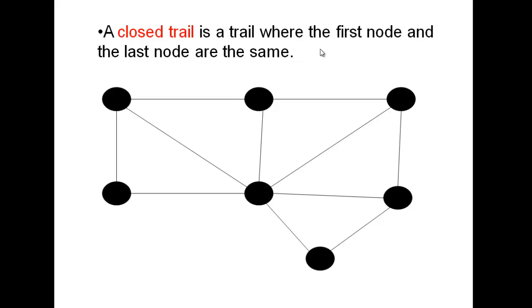A closed trail is a trail where the first node and the last node are the same. So we end back where we started. And again, it doesn't have to cover all of the graph. This, for example, would be a closed trail.